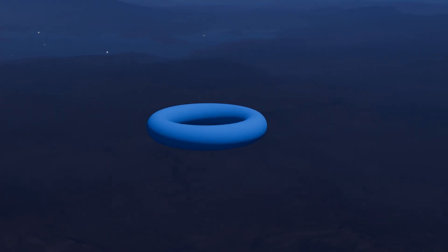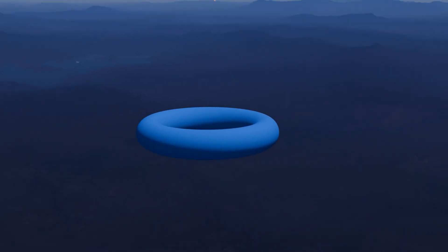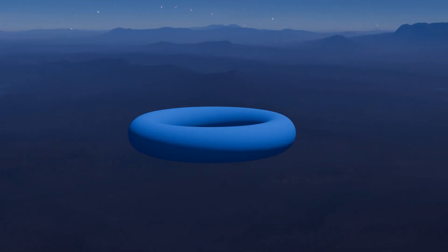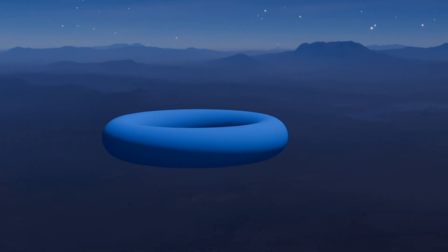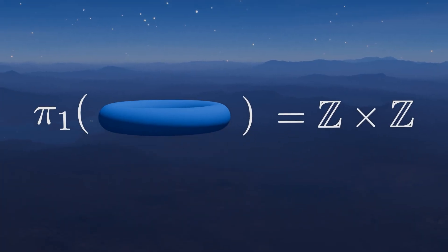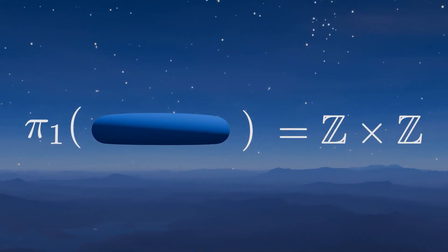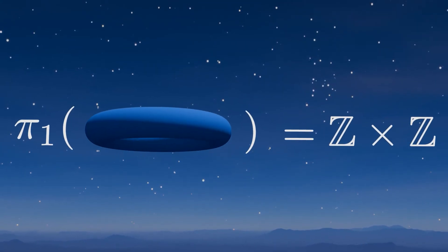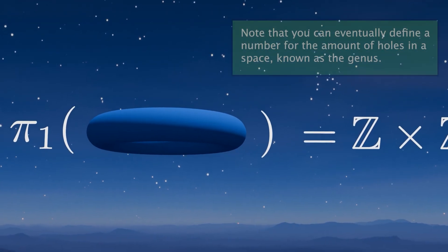Another problem is that we didn't get an exact number for the amount of holes of a topological space with the fundamental group. Our result was that the fundamental group for the torus was Z x Z. But when someone in real life asks you how many holes a donut has, you can't really just say Z x Z holes.